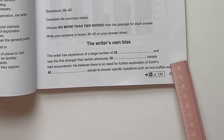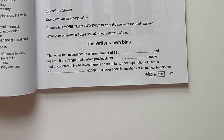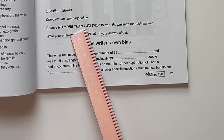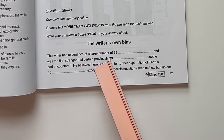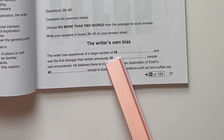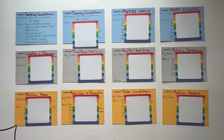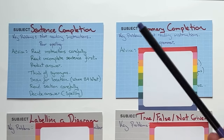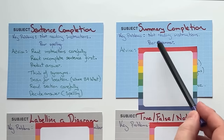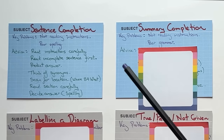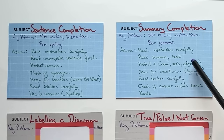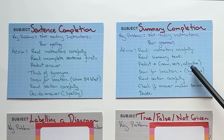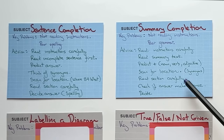Here we have an example of a summary completion question. It will normally say 'complete the summary below.' There's some missing information, and in this particular question it says no more than two words — it might say one word only — but you have to complete that summary with words from the text. For summary completion, very similar to sentence completion: not reading instructions is a problem, as is spelling, but grammar is more of an issue here because we're predicting whether an answer will be a noun, verb, or adjective.